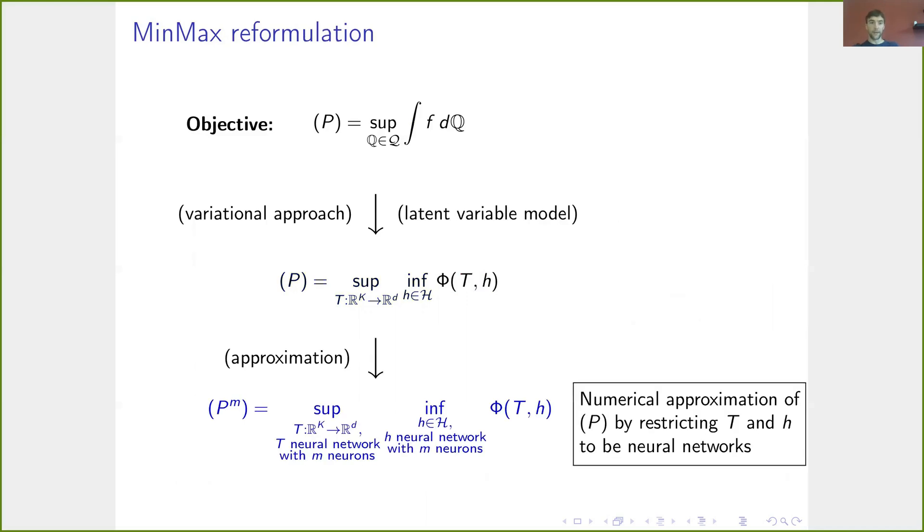The important thing about this reformulation as a sup-inf problem is that now both supremum and infimum are optimization problems over sets of measurable functions. So we can approximate these functions by neural networks of a fixed size. In doing so, we really end up in the setting of generative adversarial networks.